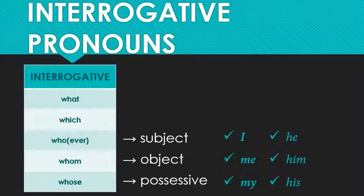Old English used to do this with all of its nouns, and plenty of other languages still do — like Russian. But this system simply died out in English as the language simplified to deal with mass Viking immigration. Who and whom, just like he and him, are living dinosaurs. The simplification process of English is still going on today, and you can see that continued evolution in the fact that whom is actually disappearing from our language as well.